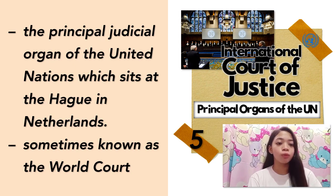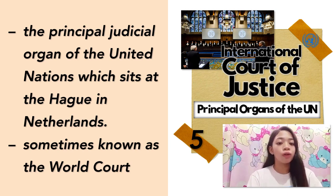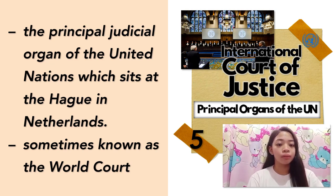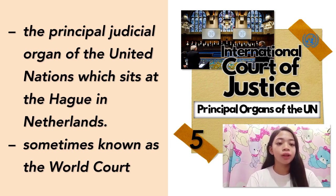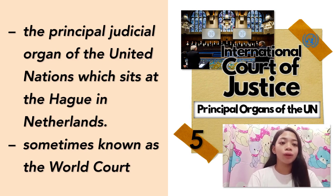The International Court of Justice was established in June 1945 by the Charter of the United Nations and began work in April 1946. The seat of the court is at the Peace Palace in The Hague, Netherlands. Of the six principal organs of the United Nations, it is the only one not located in New York. The court's role is to settle, in accordance with international law, legal disputes submitted to it by states, and to give advisory opinions on legal questions referred to it by authorized United Nations organs and specialized agencies. The court has jurisdiction in two types of cases: contentious cases between states producing binding rulings, and advisory opinions providing reasoned but non-binding rulings on questions of international law.